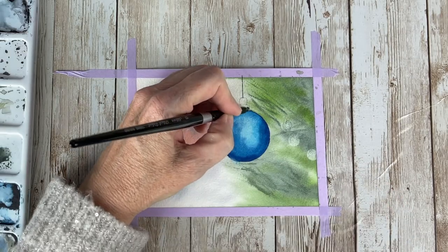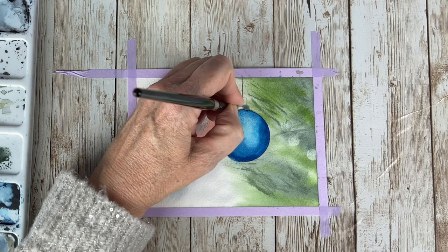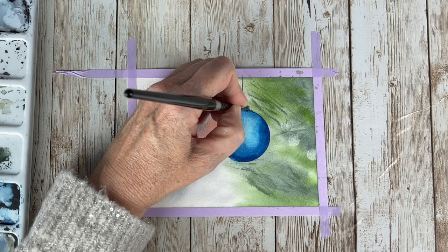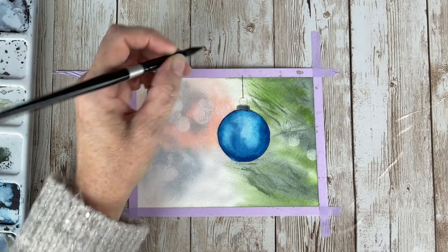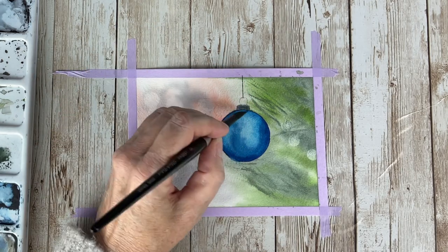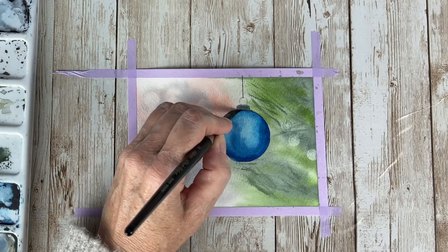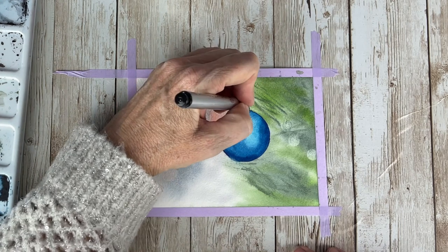Okay, I'm adding in the top of the bulb, the little metal piece, putting in just a very watery mixture of neutral tint. Adding my little loop.